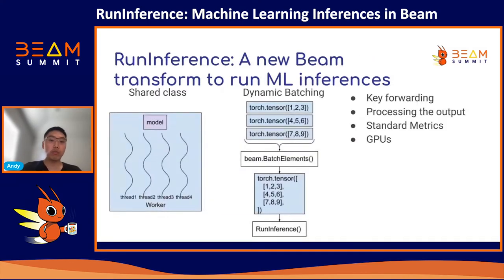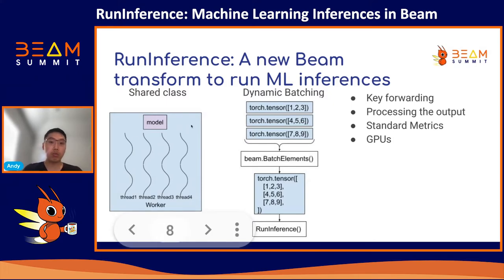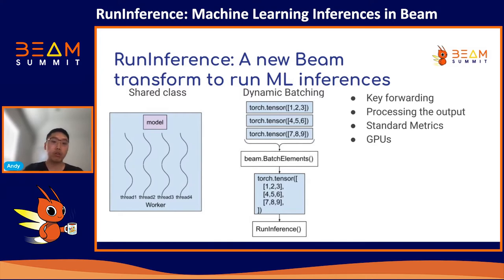With the recent release of 2.40, users can use a Run Inference Beam transform to make productionalized inferences in their pipelines. Run Inference has a clean, simple, and unified API interface shared between all internal implementations and takes care of a lot of boilerplate tasks that most models have to do. For example, using the shared class within Run Inference allows us to load the model only once per process and share it with all the DoFn instances created in that process. This reduces the memory consumption and model loading time, leading to greater efficiency for the pipeline.